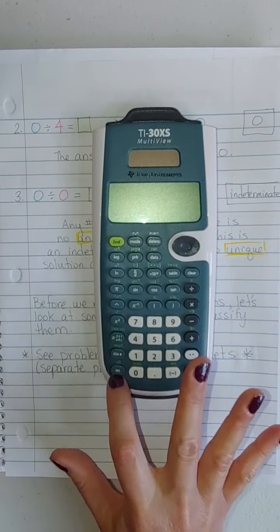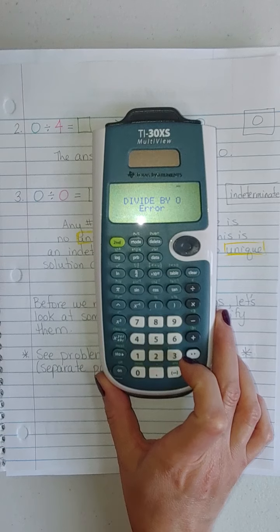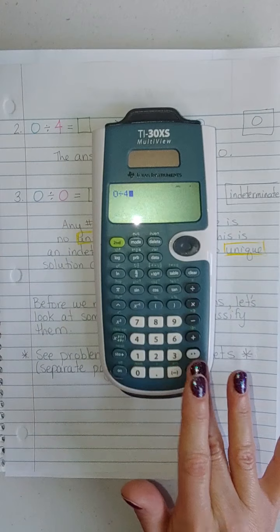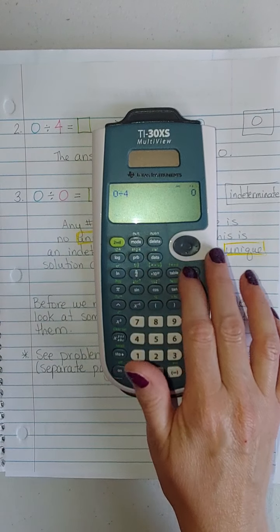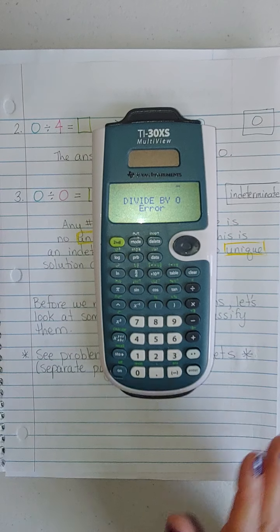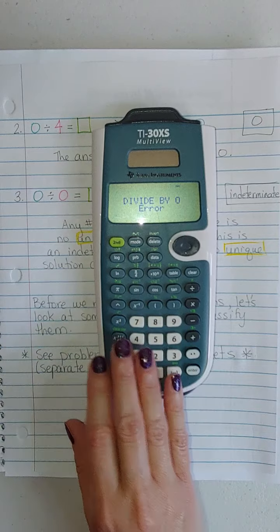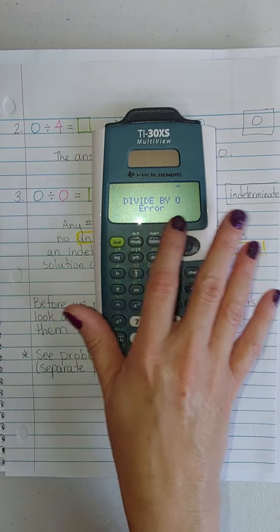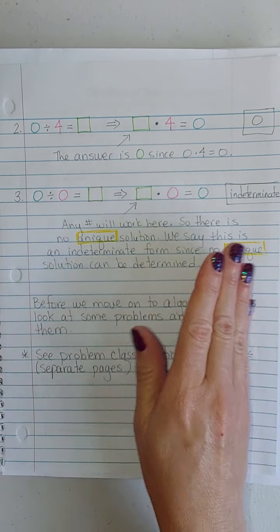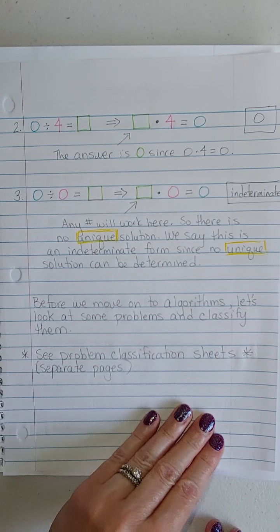Here's the thing. On your calculator, if you do 4 divided by 0, it gives you an error. 0 divided by 4, we get 0. 0 divided by 0, we get another divide by 0 error. That doesn't mean it's undefined. It just means that the calculator just says if you try to divide by 0, I'm going to give you the same answer no matter what. The calculator doesn't distinguish between indeterminate and undefined.